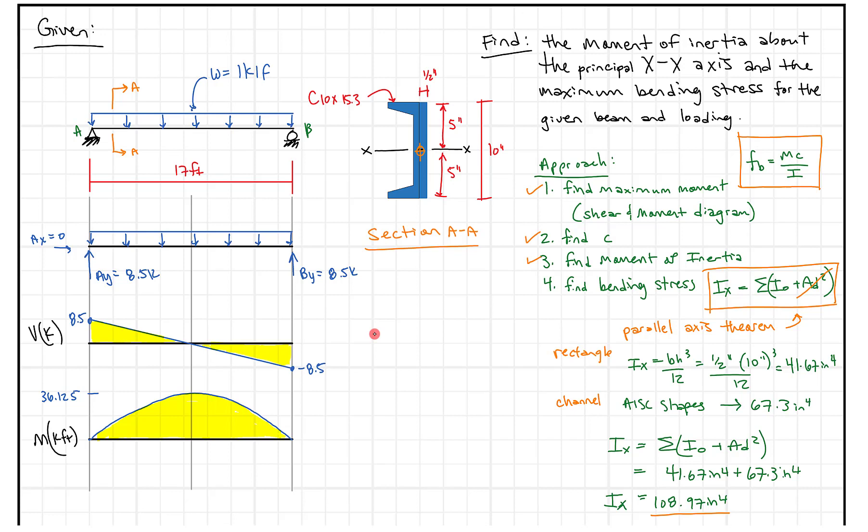So we just went through and we found our moment of inertia, 108.97 inches to the fourth. So what we have to do next is just go and find the bending stress. We're just gonna use that bending stress formula which is FB equals MC over I and plug in values that we have. So the moment was 36.125 kip feet, we're gonna multiply that by 12 inches per foot to get our unit conversions because C here is five inches and we want all the units to match. Then we're gonna divide by the moment of inertia which is 108.97 inches to the fourth. When we do that out we get our bending stress equal to 19.9 kips per square inch.